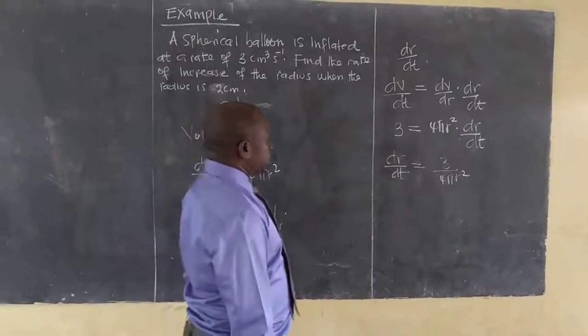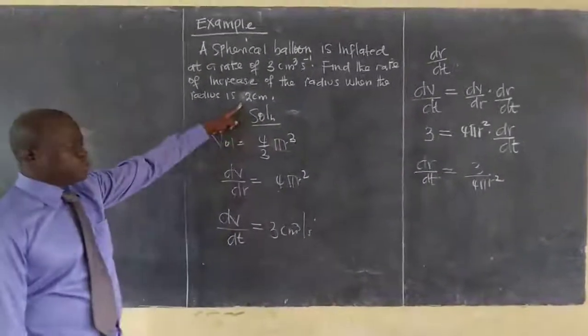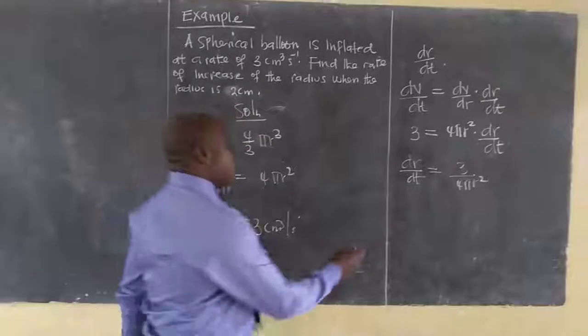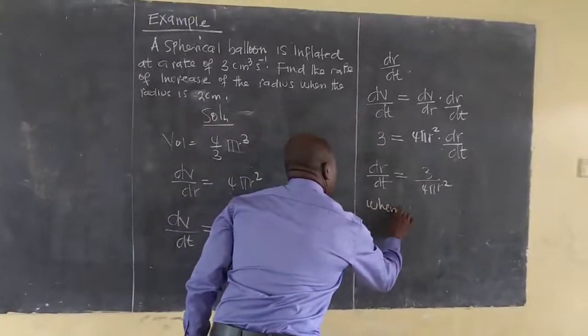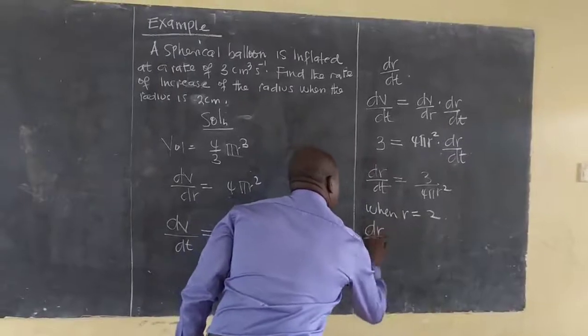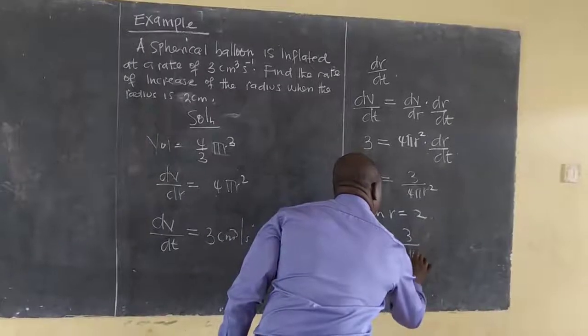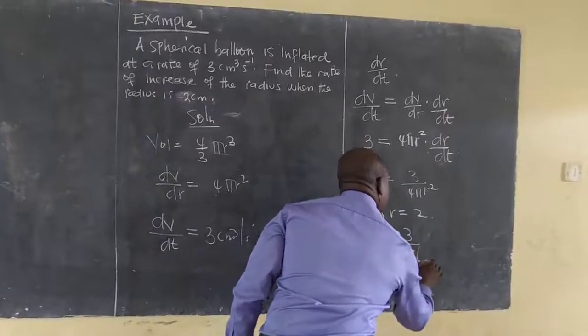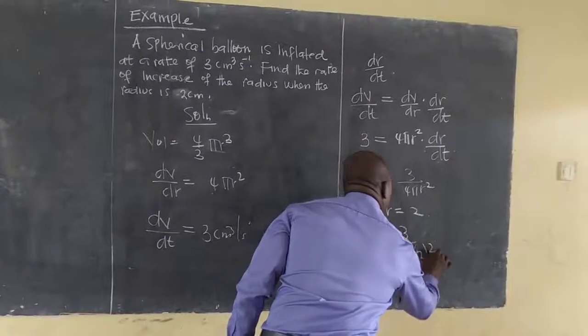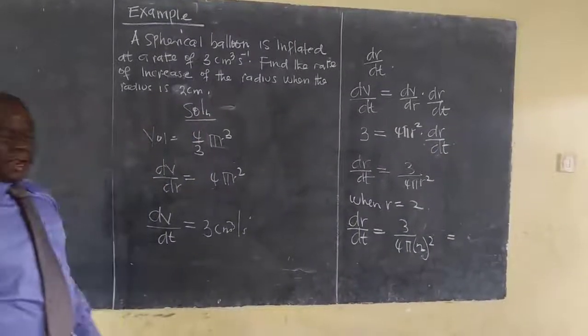Now, in this case now what I need to do is simple. I have given r to be 2. Therefore, when r is equal to 2, I can now get my dr/dt to be 3 out of 4 pi, r is now 2 squared.